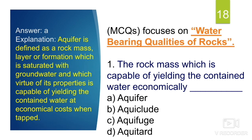The correct answer is aquifer. Aquifer is defined as permeable rock formations which store groundwater and transmit sufficient quantity of it to a pumping well. More specifically, an aquifer is a rock mass, layer, or formation which is saturated with groundwater and, by virtue of its properties, is capable of yielding the contained water at economical cost. The correct answer is option A: aquifer.